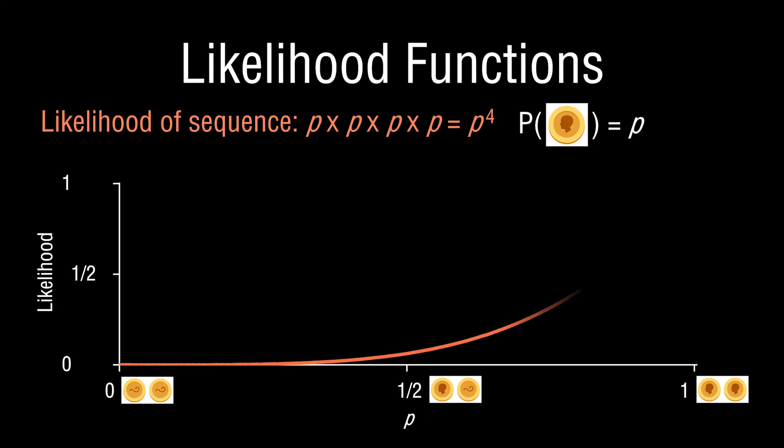Adding the likelihood function to this plot: as we increase p, the likelihood function tends to increase. That makes sense because p is the probability of heads — so if I increase the probability associated with getting heads, it is more likely that I would have observed what I observed. If p equals one, meaning the coin has heads on both sides, there is a 100% chance I would have observed what I observed.